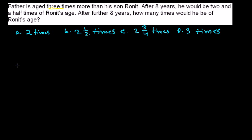Let's begin and solve this problem. It says a father is aged three times more than his son Ronit. After eight years, he would be two and a half times Ronit's age. After a further eight years, how many times would he be of Ronit's age? It seems complicated at first, but with a systematic approach it becomes easier.